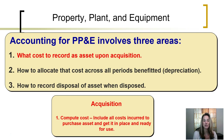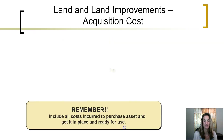In order to determine what amount we record in the asset account when it is first acquired, we need to compute the cost. The cost that is recorded includes all costs incurred to purchase the asset, as well as get it in place and ready for its intended use.